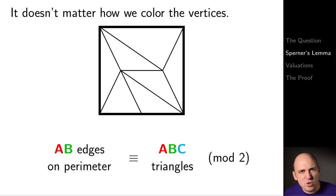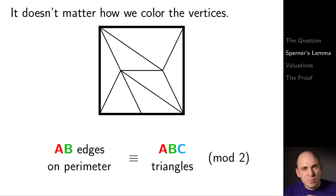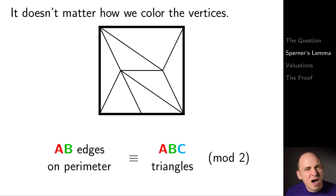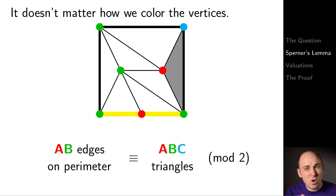This is the statement of Sperner's lemma. No matter how you triangulate, no matter how you color the vertices, the number of perimeter AB edges and the number of ABC complete triangles are congruent modulo 2. Here I'll color the vertices indifferently, and now there are two AB edges and also two ABC triangles.